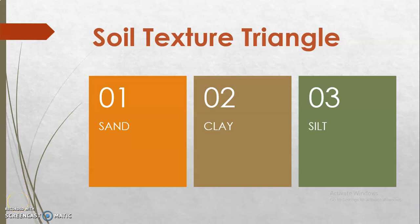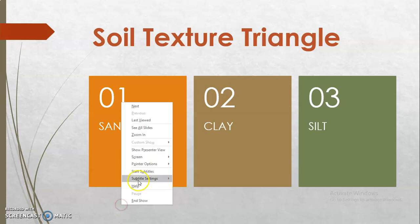Hello students, Professor Bell with you. This is going to be a very quick tutorial to show you how to figure out soil texture using the soil texture triangle. Our three components are, of course, going to be sand, clay, and silt. This is in your textbook in chapter 8.